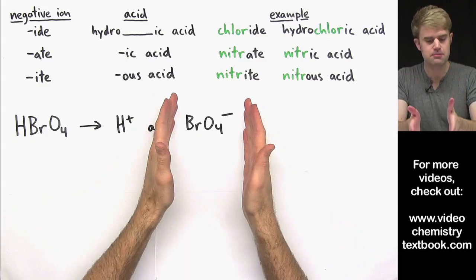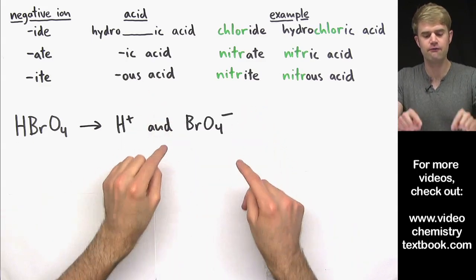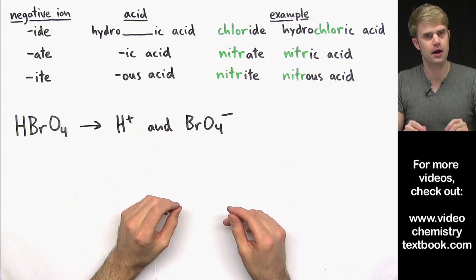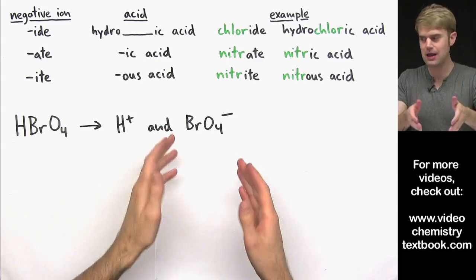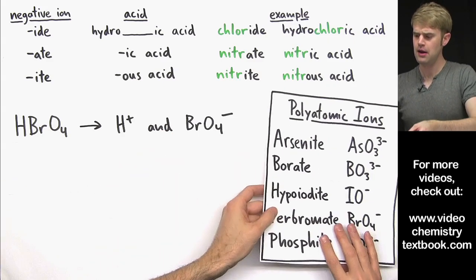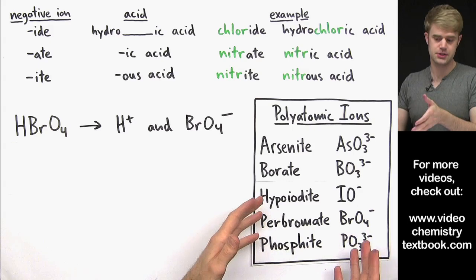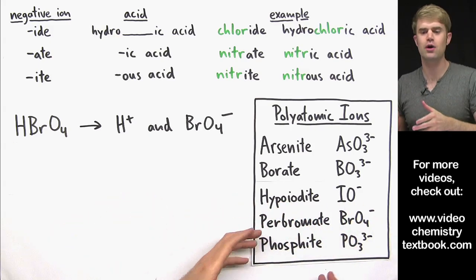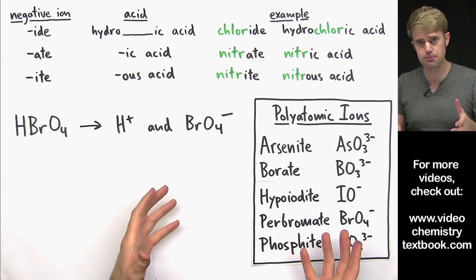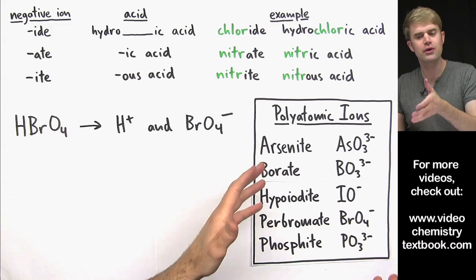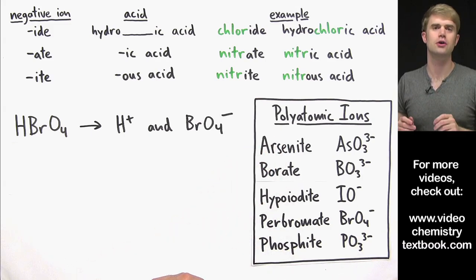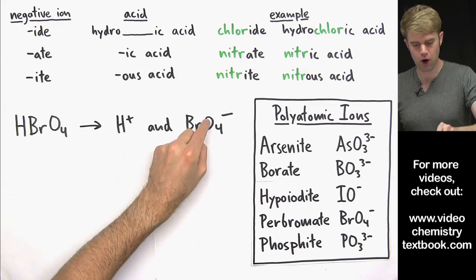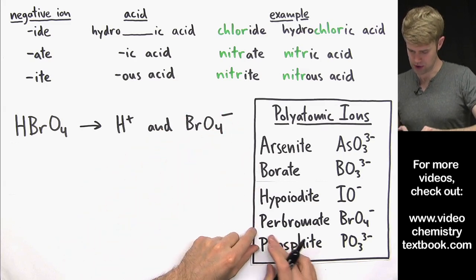So this is my negative ion. The next thing I've got to do is figure out the name of this negative ion. Now, this is a polyatomic ion made of more than one atom. So to name it, I'll take a look at this chart here. Now this is just a small list of the polyatomic ions I'm going to be using in this video, but it's a really good idea to memorize a bunch of the polyatomic ions. Check out your textbook or maybe your teacher has a larger, more comprehensive list. BrO4 1 minus is perbromate.